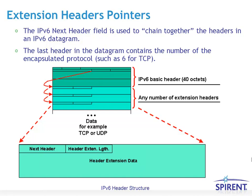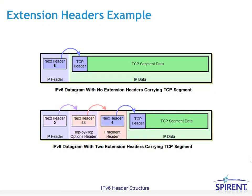IPv6 does not have that same limitation. Ultimately there could be an upper layer protocol carried by TCP or UDP, and so the final next header field would point to either one. Here's an example: in the top datagram you just have an IPv6 header followed by a TCP header with TCP segment data, so the IPv6 next header field has a value of 6 pointing to the TCP header.